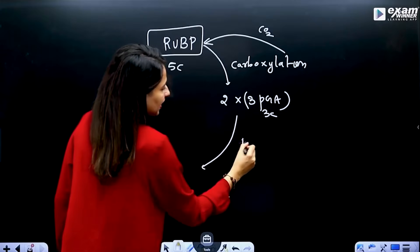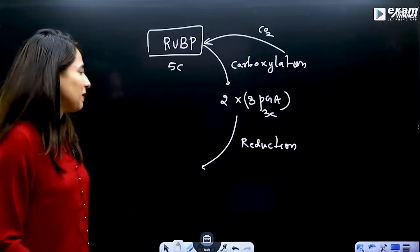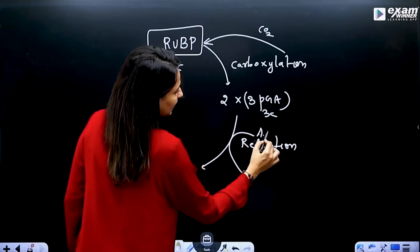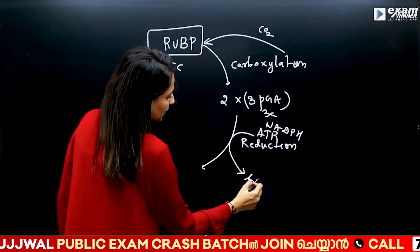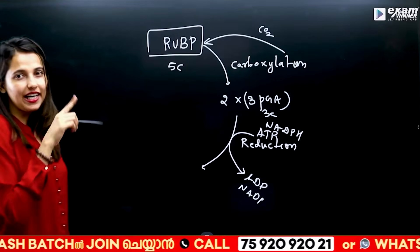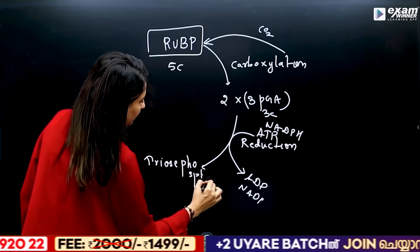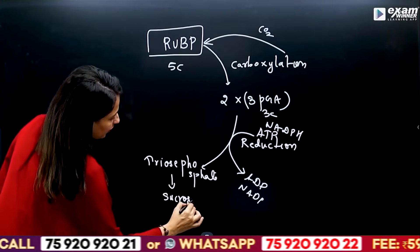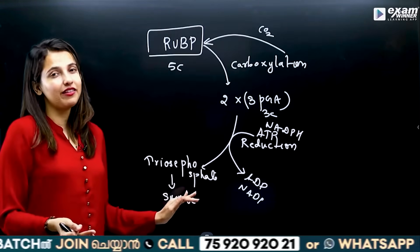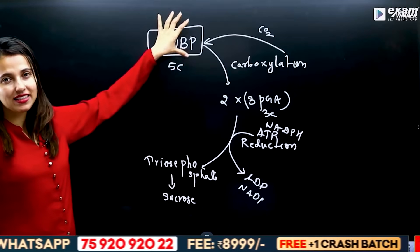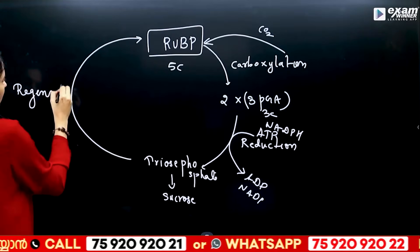We then reduce. Reduction is the second phase, using ATP and NADP. The product is triose phosphate. After the reduction phase, we move to the regeneration step — this is our third step of the Calvin cycle.